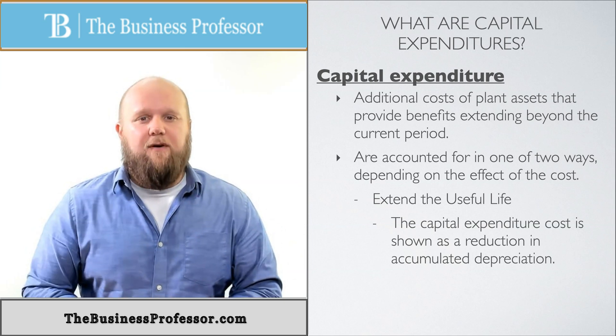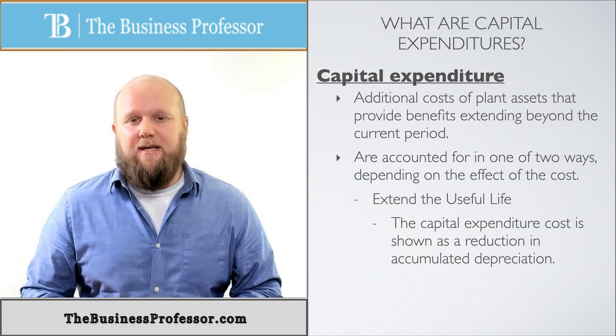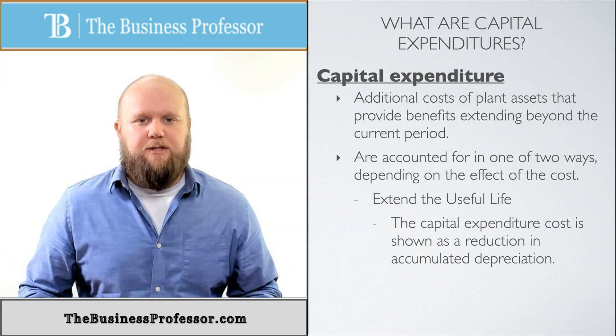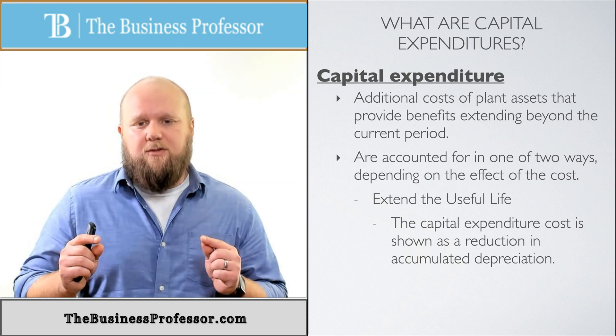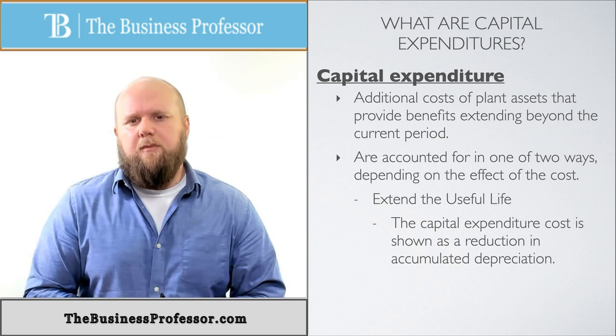If it extends the useful life, we take it away from accumulated depreciation, what we have already depreciated. We kind of look at it as we've offset some depreciation that we've already depreciated. So that's what we're doing with these. In the next video, I'm going to show you how to do the examples for these expenditures. And hopefully it'll make a little bit more sense.